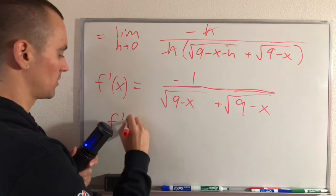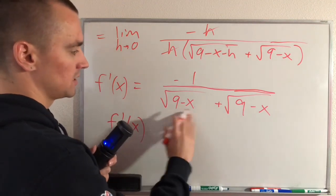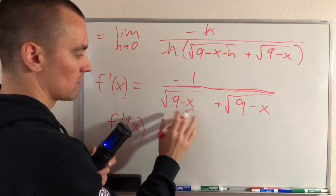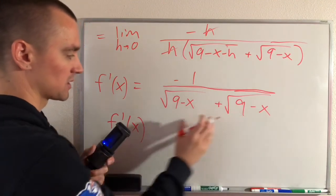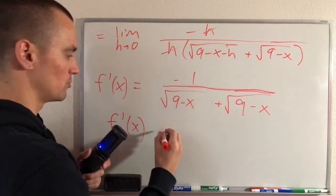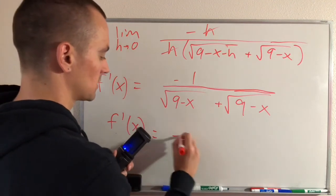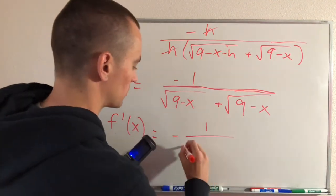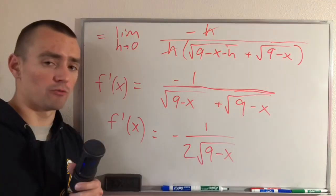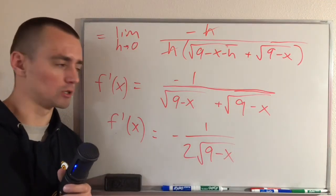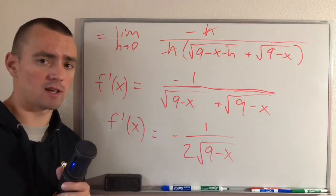So now all we really have to do is kind of simplify this. So doing that you can see we'll get, these two are the same so the same thing plus the same thing is just gonna be two of those things. So two times that square root. So we're just gonna have equals negative one over two times the square root of nine minus x.